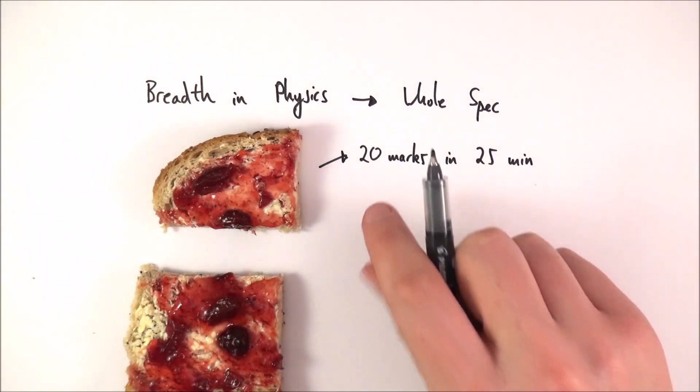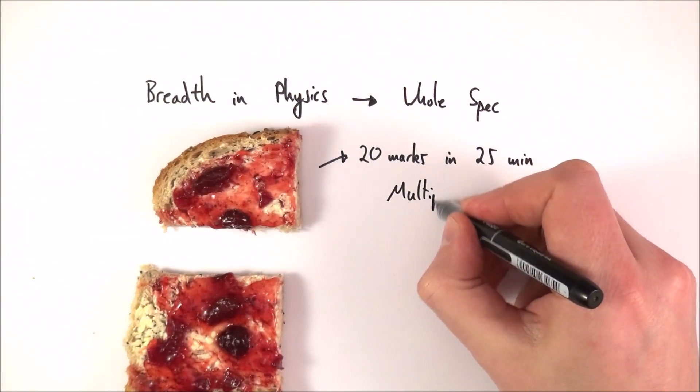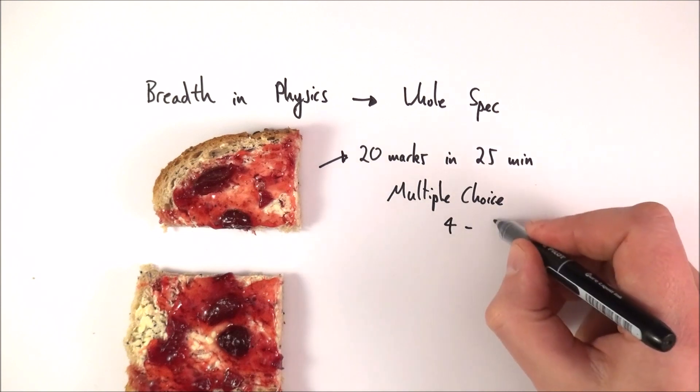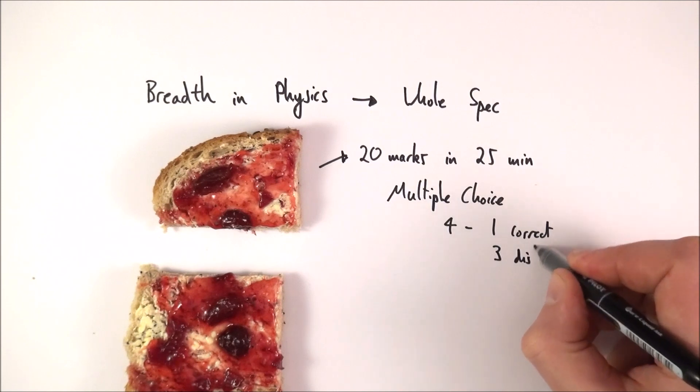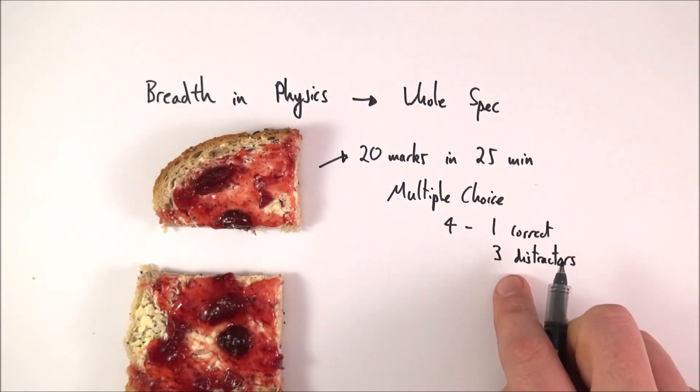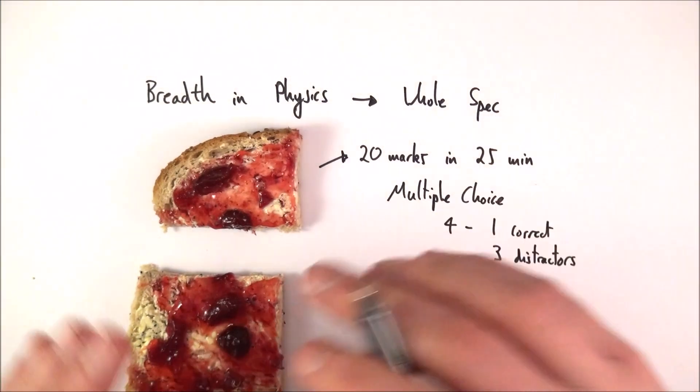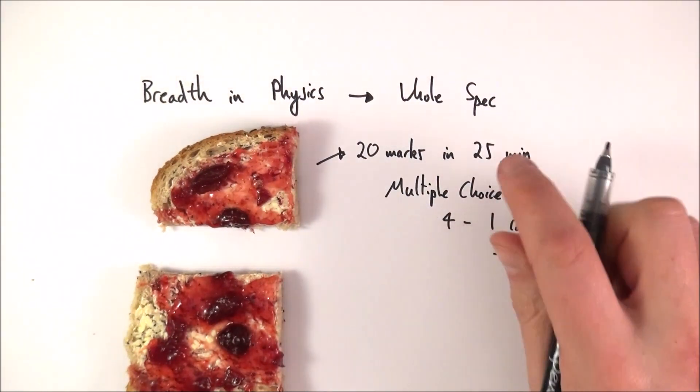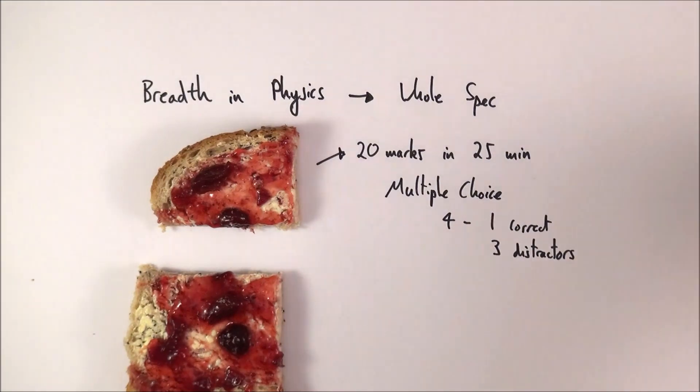Now what you're going to get are 20 questions, each of them is multiple choice, and for each one of these there are four answers. Now basically one of them is correct and the other three are what we call distractors. And these answers, you know, they look almost right. They might be out by a power of 10, they might be where you've divided something by something else, or maybe the reciprocal of the right answer.